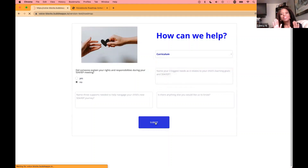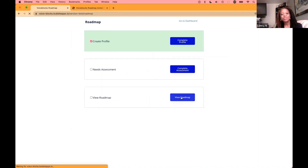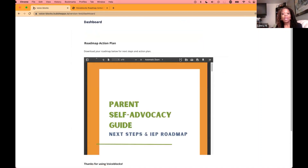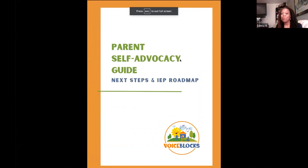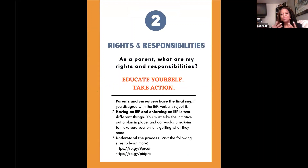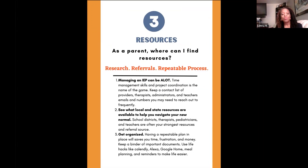And then finally, the key feature is an actionable roadmap. That roadmap will tell them: number one, what is their role as a parent in the IEP process; number two, what are their rights and responsibilities. We also list some resources where they can learn more. Number three, we also present resources, referrals, and let them know it's a repeatable process.